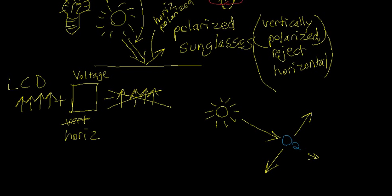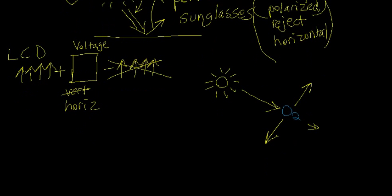A trick you can do there though, since horizontally polarized sunglasses aren't normally sold, is you can tilt your head 45 degrees.